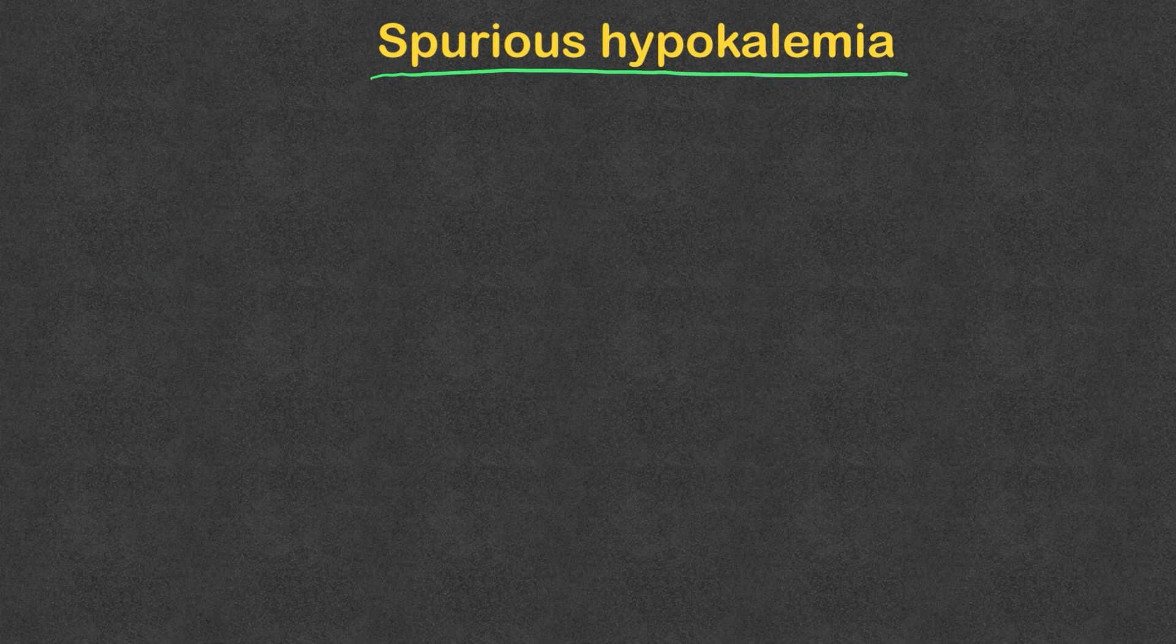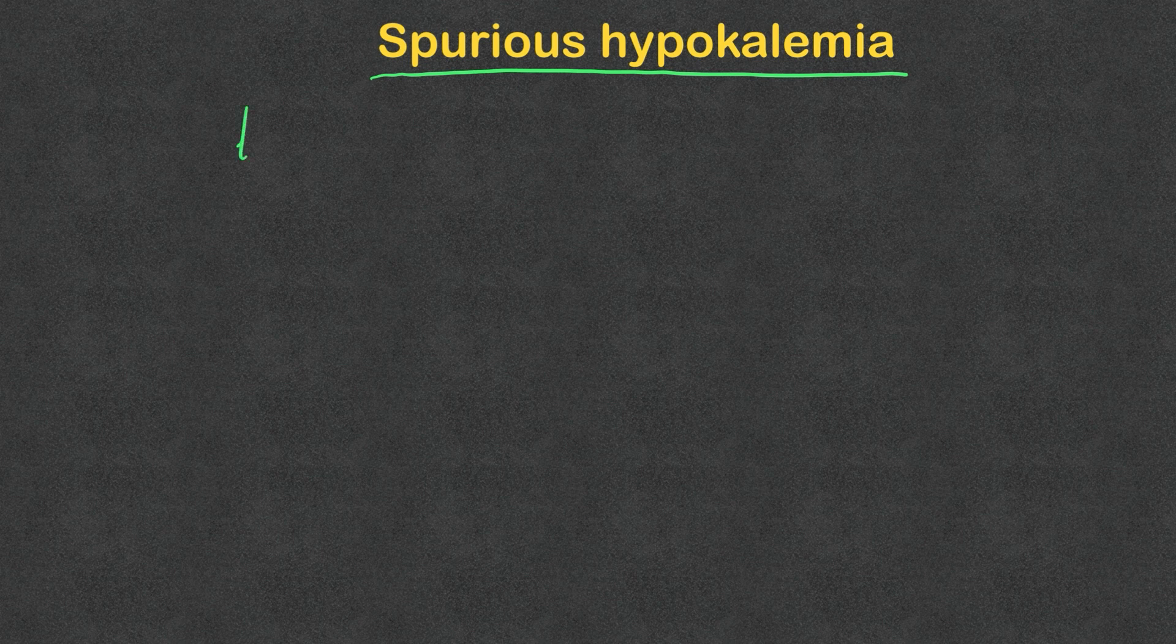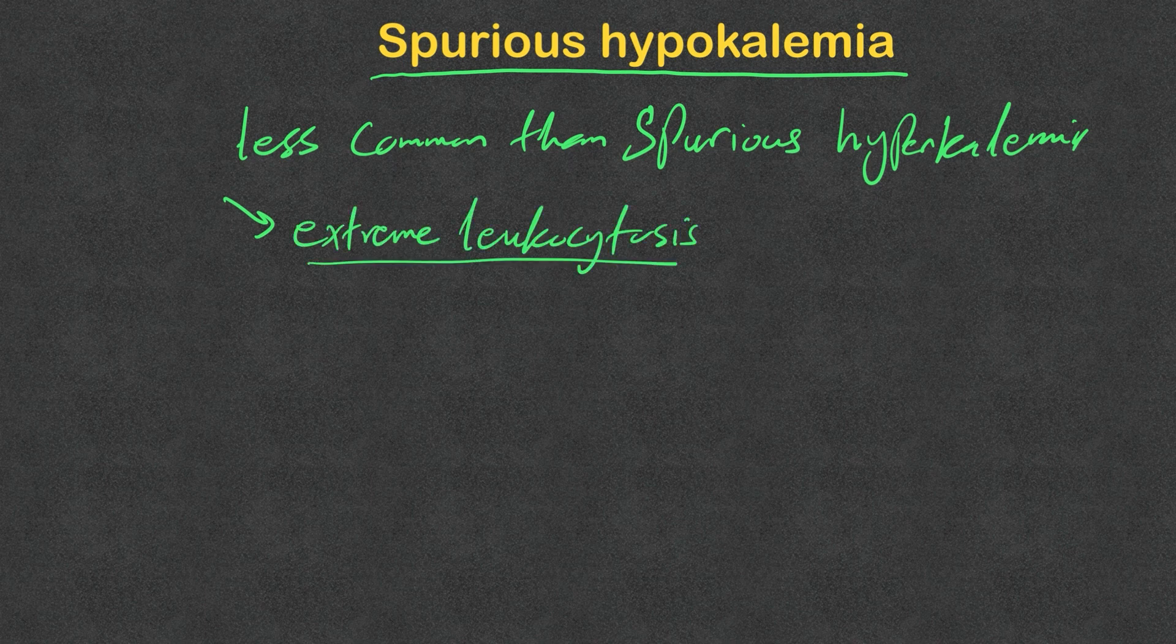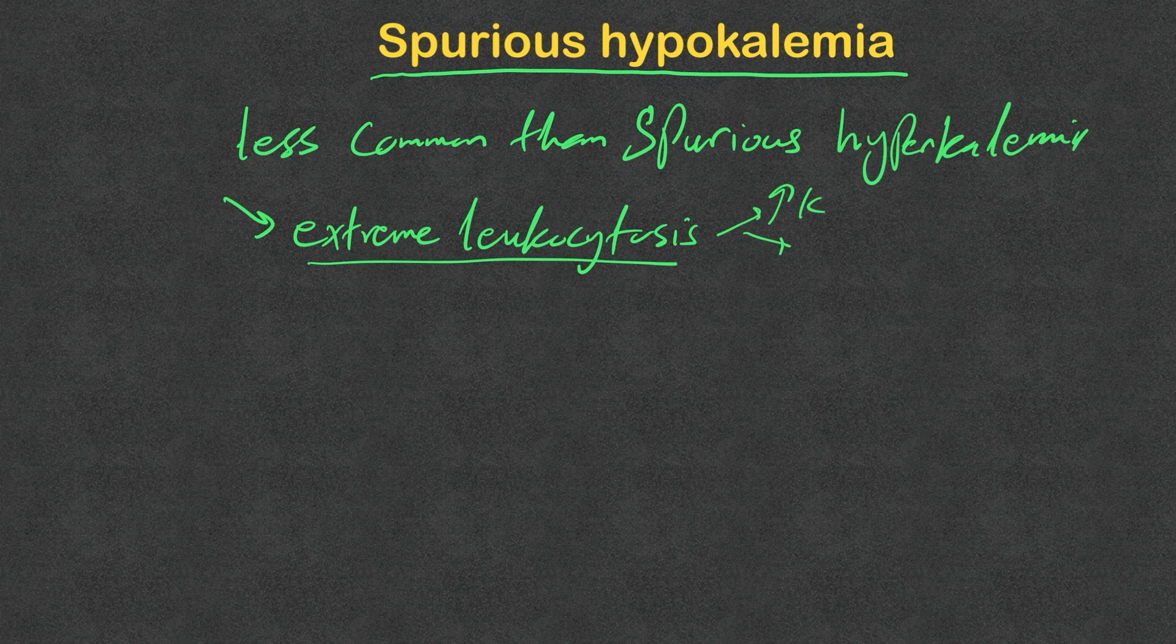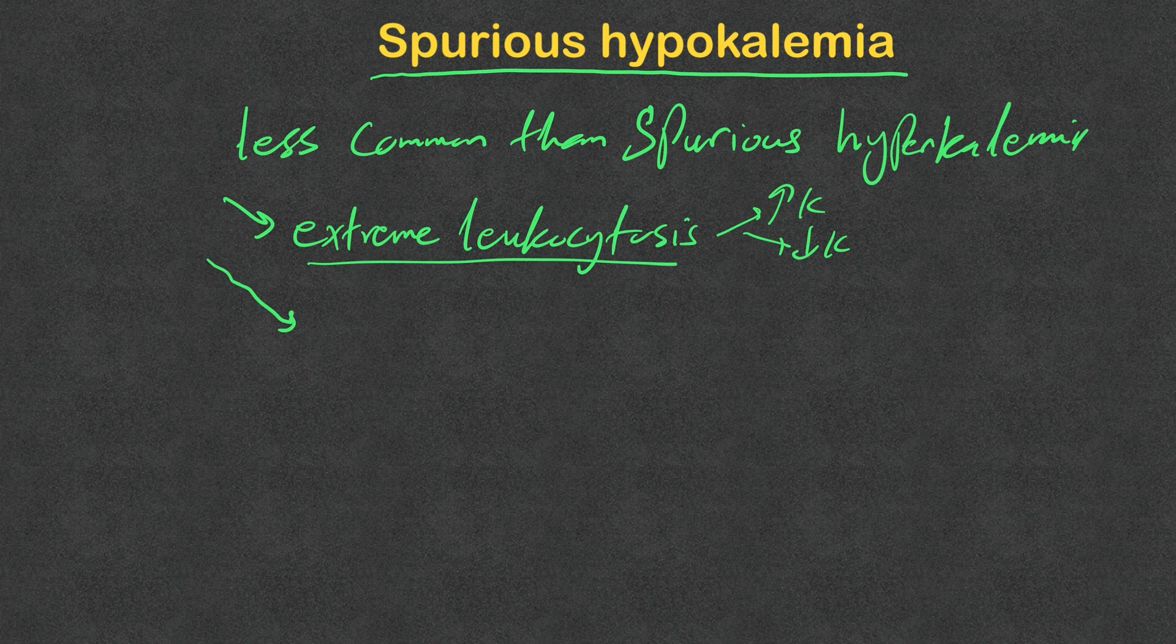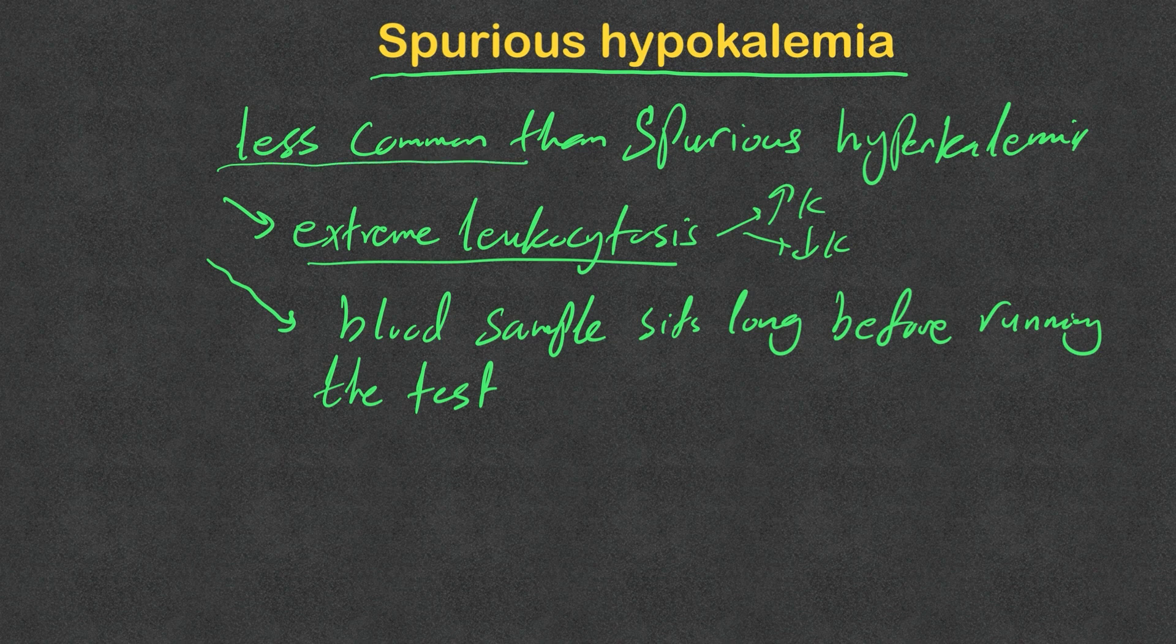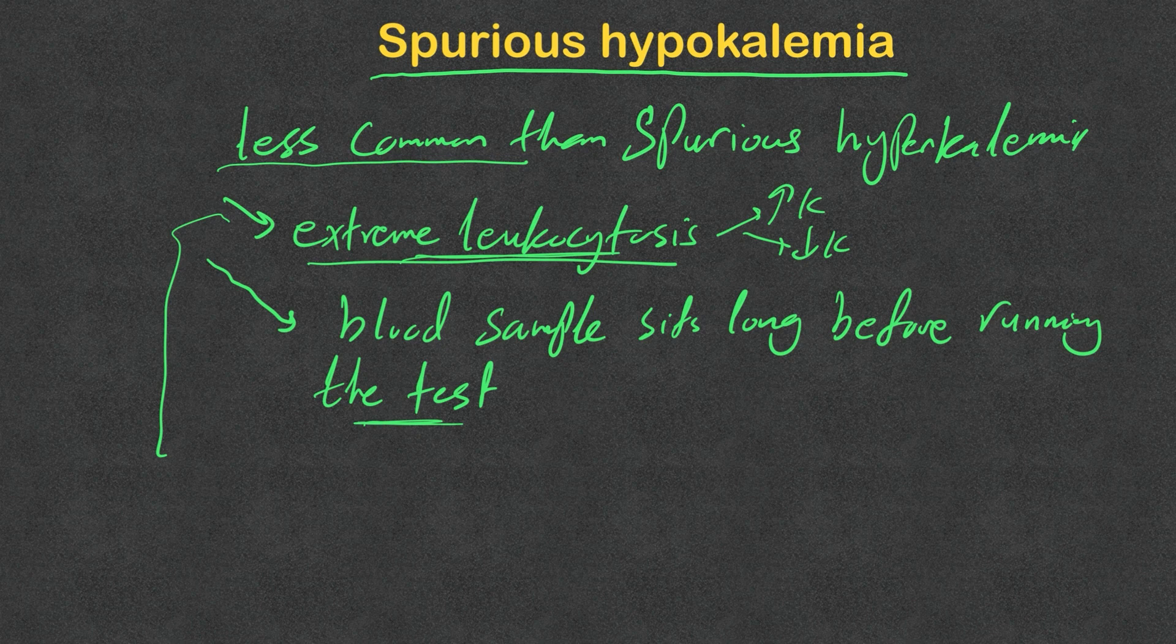Before we dig further into the treatment, I want to take a second to talk about spurious or false hypokalemia. This is way less common than spurious hyperkalemia and it can happen mainly when there is extreme leukocytosis. Remember, extreme leukocytosis can cause false hyperkalemia and false hypokalemia, especially if after they draw the blood, the blood stays in the tube for a prolonged period of time before running the test. It's not that common, but keep it in your mind, especially when you have extreme leukocytosis.